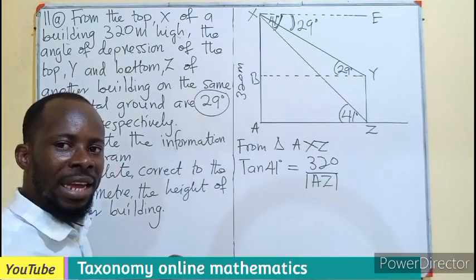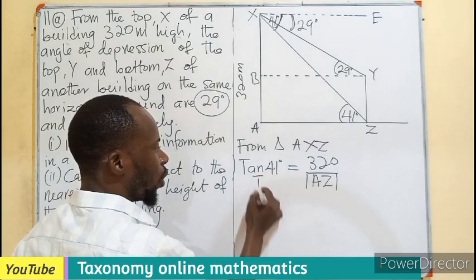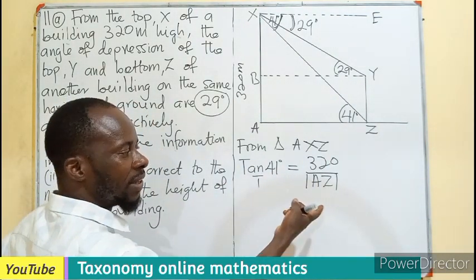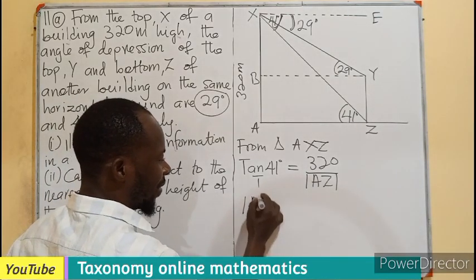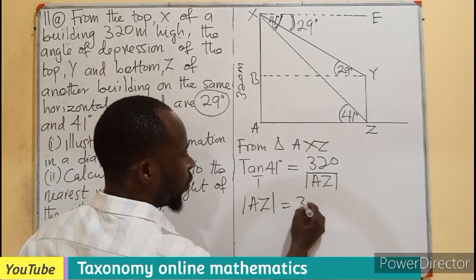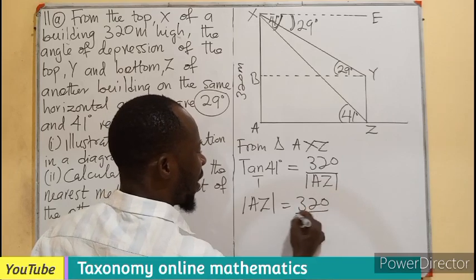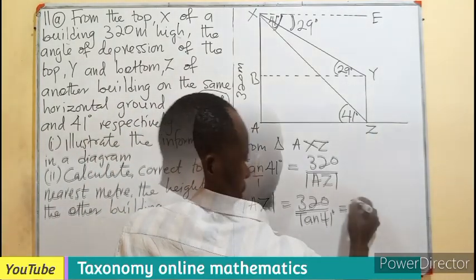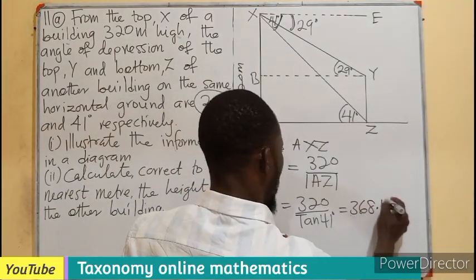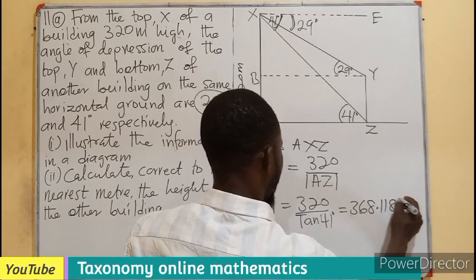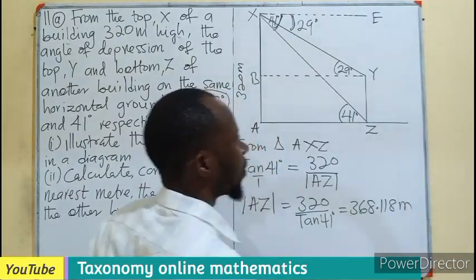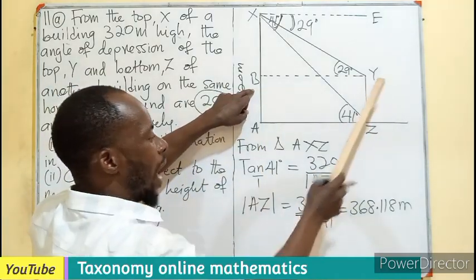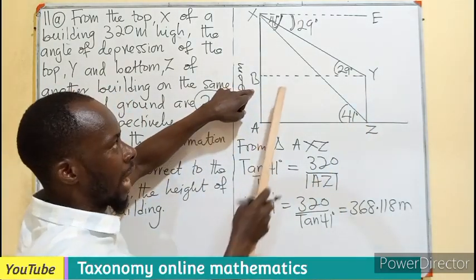We cross-multiply: AZ equals 320 divided by tan 41 degrees, which gives us 368.118 meters. The moment I know AZ, it means BY is also known. Now I can use BY to find the next side.